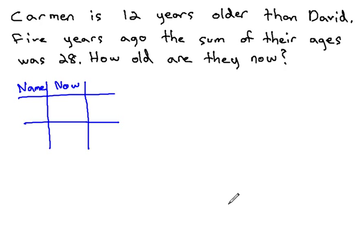Here, we have Carmen is 12 years older than David. Five years ago, the sum of their ages was 28. We want to know how old are they now. The names are Carmen and David. We'll represent them with C and D.